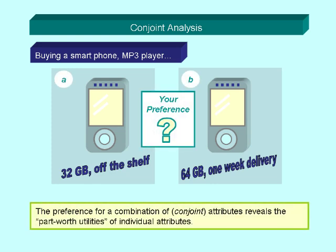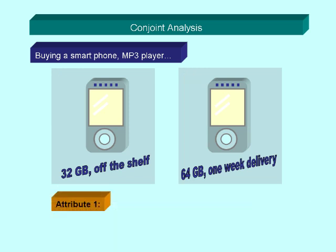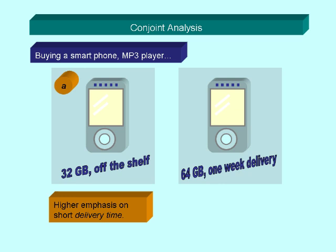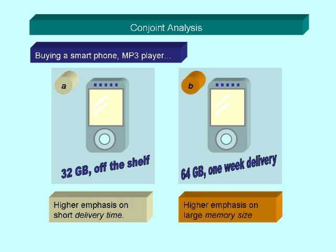Your preference for one of the alternatives will reveal the part-worth utilities of individual attributes. In our example, attribute 1 is the memory size and attribute 2 is the delivery time. When you choose model A, it will show that you put higher emphasis on a short delivery time. Choosing model B will reveal your higher emphasis on a large memory size.